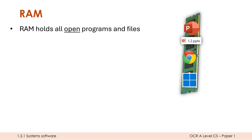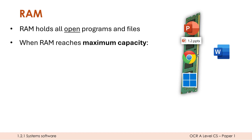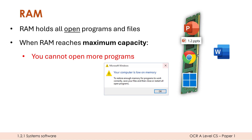Let's pretend this very simplistic diagram represents the fact that RAM is now full — it has reached its maximum capacity — which is a problem if I want to open another program. I double-click on Microsoft Word, I want to use it, but RAM is full. So what could potentially happen? Well, it might not let me open any more programs. It might say you're low on memory, you can't open Microsoft Word.